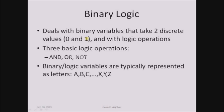In a binary system, every quantity is represented only with two elements, either 0 and 1, which is why the base of the binary system is 2. In the same way, a binary variable can only accept two values, either 0 or 1. Throughout Boolean algebra, we are going to use three basic logical operators: AND, OR and NOT.